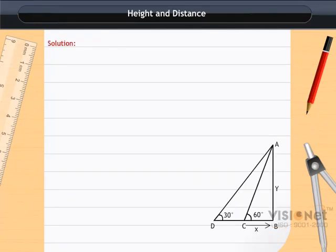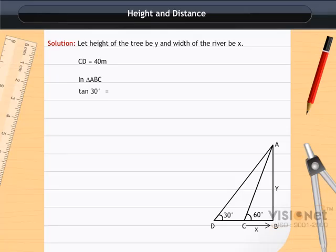Solution. Let height of the tree be Y and width of the river be X. CD is equal to 40 meter. In triangle ABD, tan 30 degree is equal to AB by BD. As tan 30 degree is equal to 1 by root 3, so 1 by root 3 is equal to Y by X plus 40, which implies X plus 40 is equal to Y root 3.